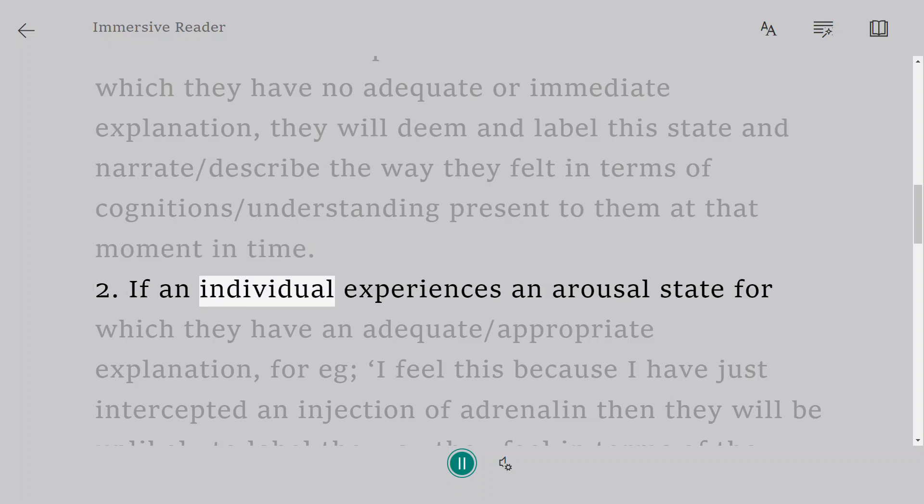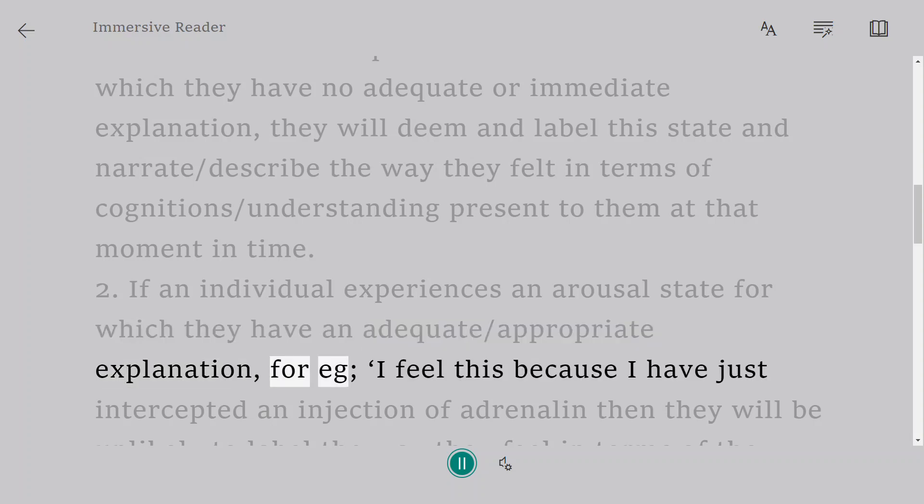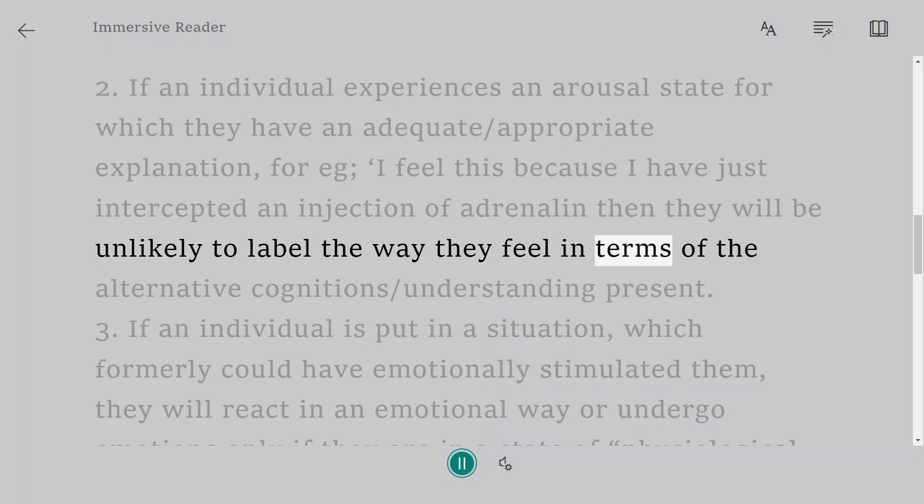2. If an individual experiences an arousal state for which they have an adequate/appropriate explanation, for example 'I feel this because I have just received an injection of adrenaline,' then they will be unlikely to label the way they feel in terms of the alternative cognitions/understanding present.